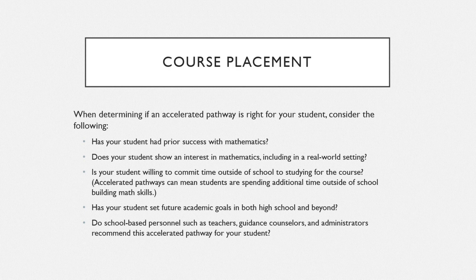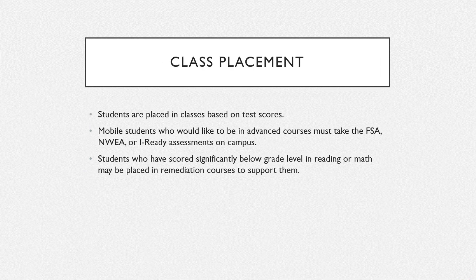We will place students based on their coursework and test scores. As a parent, if you're unsure about your student being in certain classes, we can have that conversation. Overall, students are placed in their classes based on FSA, NWA, and iReady scores. For any mobile students looking to be placed in advanced classes, you have to come on campus to test, because we need data to support that placement. Students who score significantly below grade level in reading or math may be placed in remediation courses, such as our Powerball program, to ensure they get the support they need.